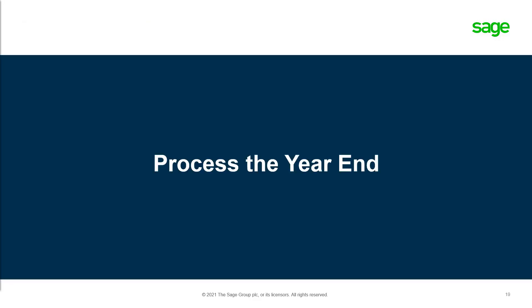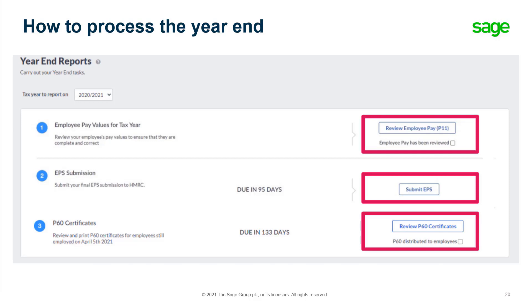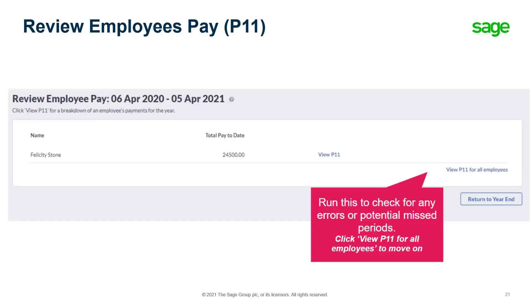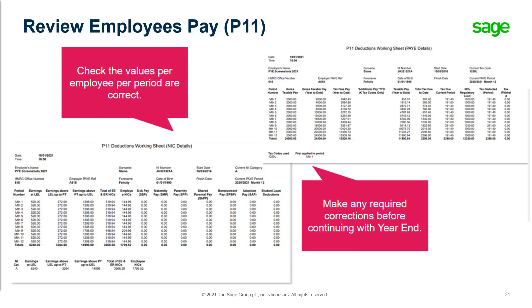Now let's look at how to process the payroll year-end itself. Simply go to the Year-End tab where you will be able to review the employee pay and the P11, submit your EPS, and review the P60 certificates, marking them as distributed to all employees when completed. Run the P11 report to check for any errors or potential missed periods. You will then be able to review the values per employee and make any corrections before continuing.